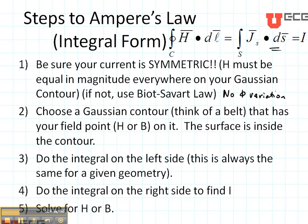Then choose a Gaussian contour. Think of a belt that's able to wrap around all the current that you are interested in. So, for instance, if I have a current in this direction, I'm just going to put a circular belt like this in order to find the magnetic field. The surface that we'll be integrating on the right hand side is inside that belt.